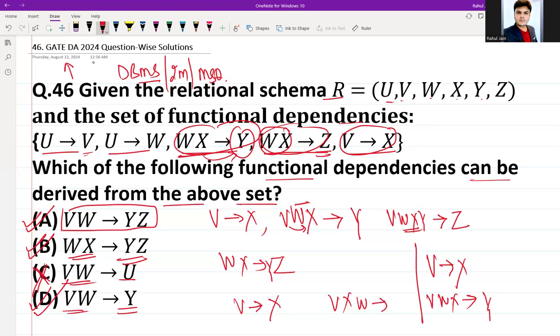In this MSQ question, if you see the answer, A, B, and D—these three options are correct for this GATE question which was asked for two marks in GATE 2024. I hope the question was easy and the solution is very clear to all of you.